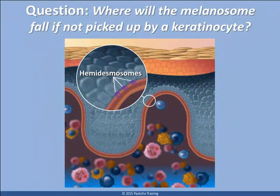Question: where will the melanosome fall if not picked up by a keratinocyte? Answer: our base knowledge of skin tells us that the keratinocyte mother cell and melanocytes are attached to the basal laminar of the dermal-epidermal junction by keratin filaments called hemidesmosomes. This junction is made up of three layers of collagen connective tissue and is permeable, and in some literature is referred to as the dermajunction.